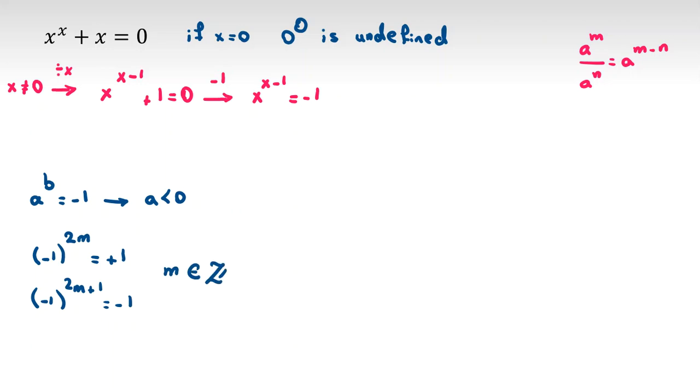So a should be less than 0, because here we have negative 1, so it's negative. b should be odd. b is an odd integer. So we can say, okay, a is negative. We can say negative c, which c is positive.